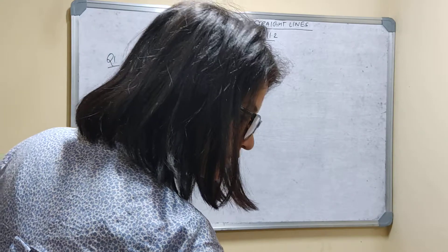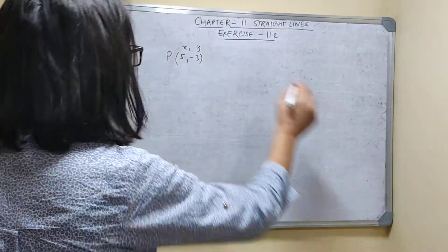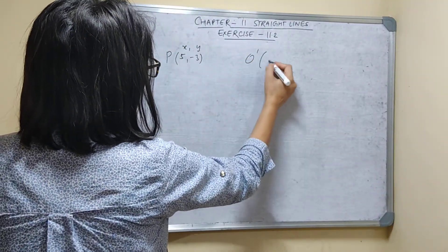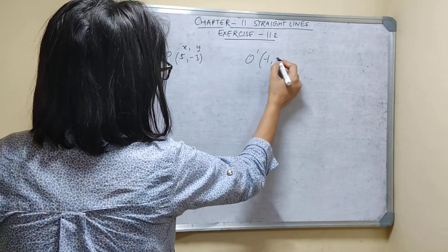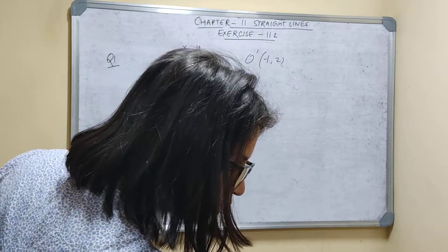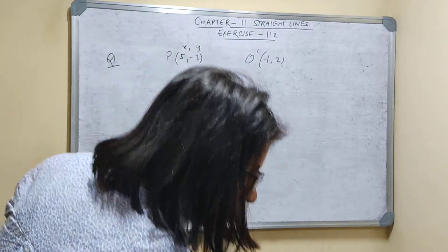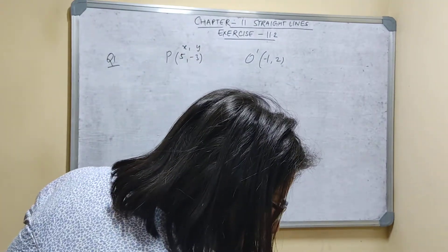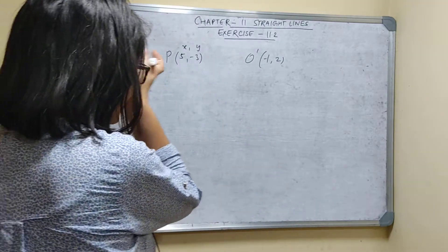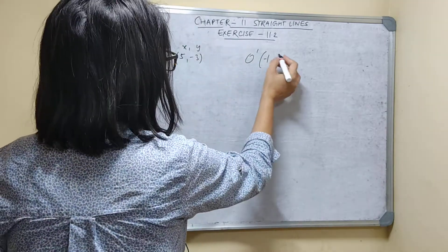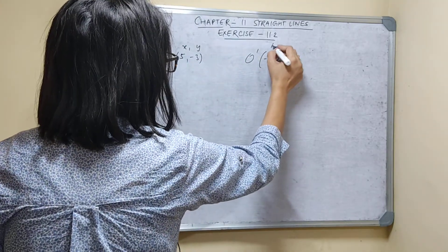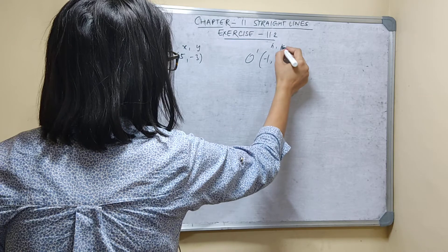If the origin is shifted to the point (-1, 2), so the new origin O' is (-1, 2). The axes remain parallel to the original axis. So this is O' at (-1, 2), and these are H and K coordinates.